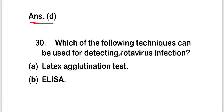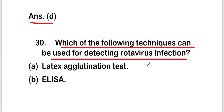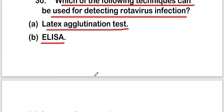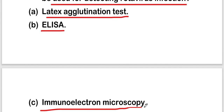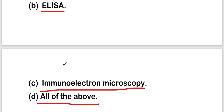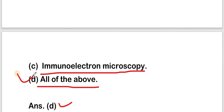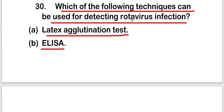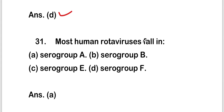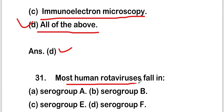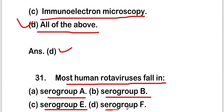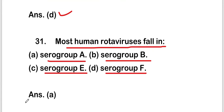Which of the following techniques can be used for detecting rotavirus infection? Options are latex agglutination test, ELISA test, immunoelectron microscopy, or all of the above. The right answer is option D, all of the above. Next: most human rotaviruses fall in serogroup A, B, E, or F? The right answer is option A, serogroup A.